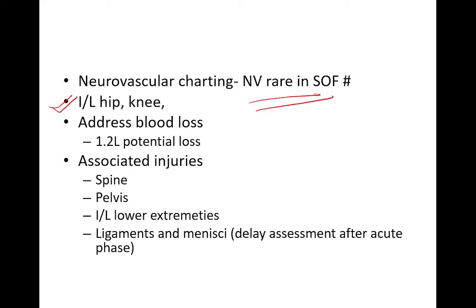We must address blood loss, as shaft of femur fractures can potentially cause blood loss of 1.2 litres. Associated injuries to the spine, pelvis, ipsilateral lower extremities, and ligaments and menisci should also be ruled out. Examination of the ligaments and menisci should be delayed until the acute phase is over.